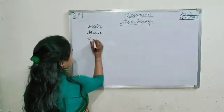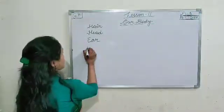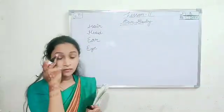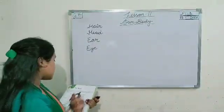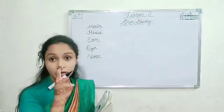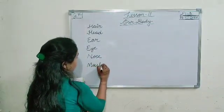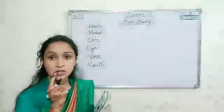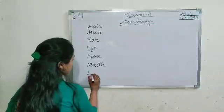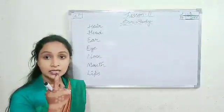After that, ear — E-A-R. Then eye — E-Y-E. We have two eyes to see. Then nose — N-O-S-E. We have one nose. Then mouth — M-O-U-T-H. Then lips. It is lips and it is mouth.